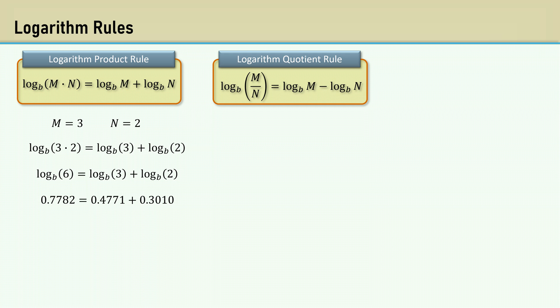The logarithm quotient rule states that the log of m divided by n equals the log of m minus the log of n, assuming the base of all the logs are the same base, b. Let m equal 3 and n equal 2. The log of 1.5 equals the log of 3 minus the log of 2. And there's the numerical solution.